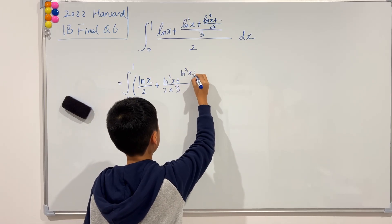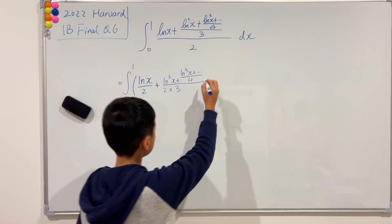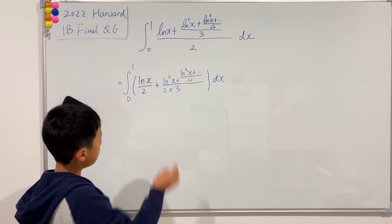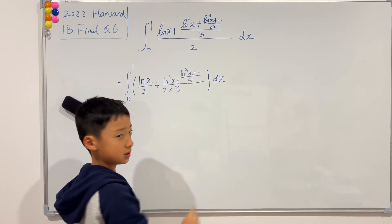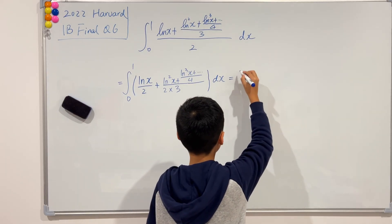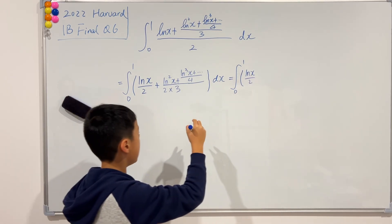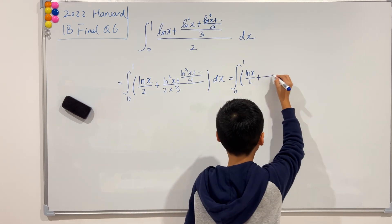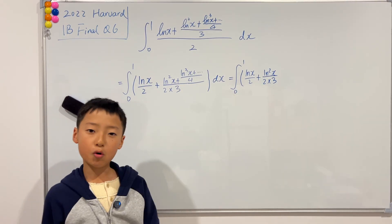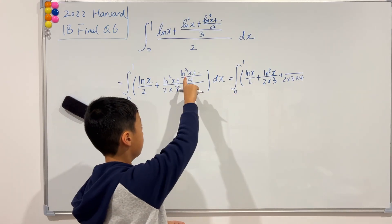Plus ln cubed of x times the dot over 4, and we don't have any more over 3 because we already multiplied that to the bottom. Now we're going to do the same thing — partial fraction ln squared of x over this plus this over this, and when we do this big fraction over this we multiply the 4 to the bottom, so we add 2 times 3 times 4, and the top is ln cubed of x.